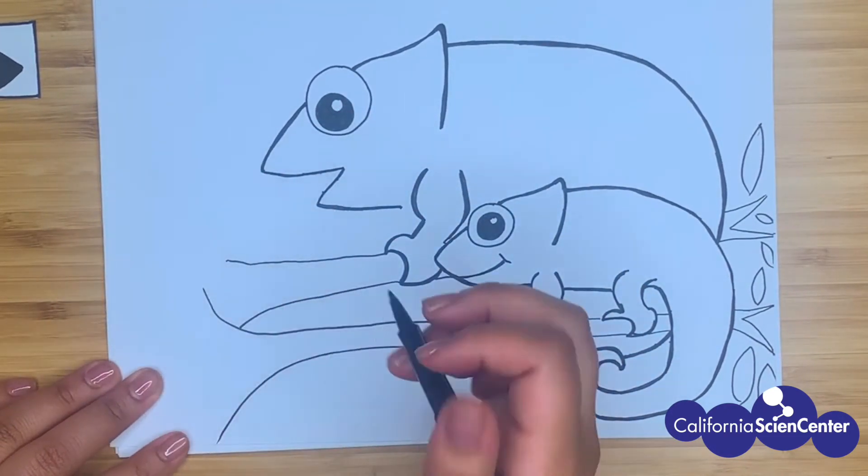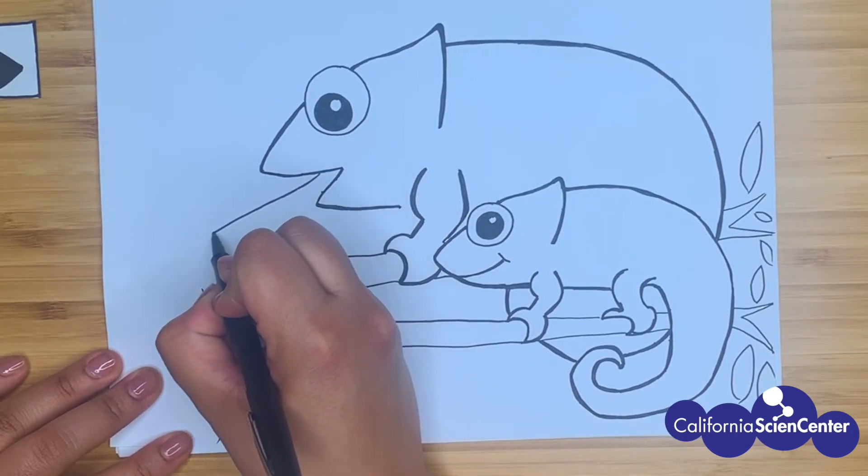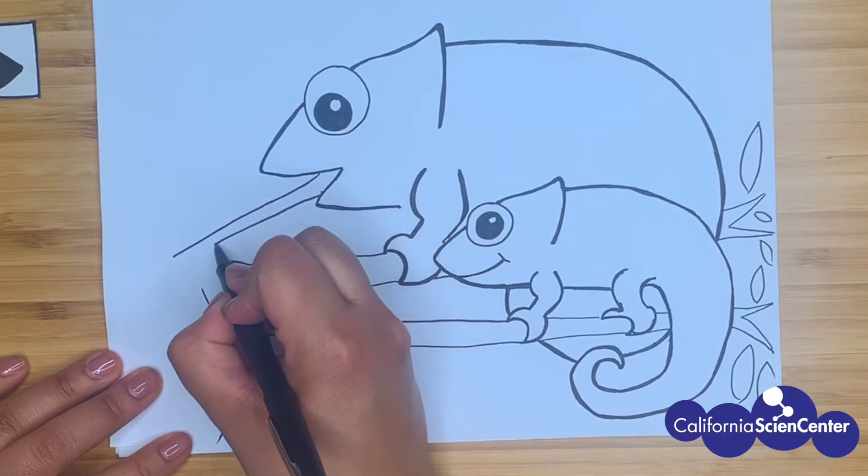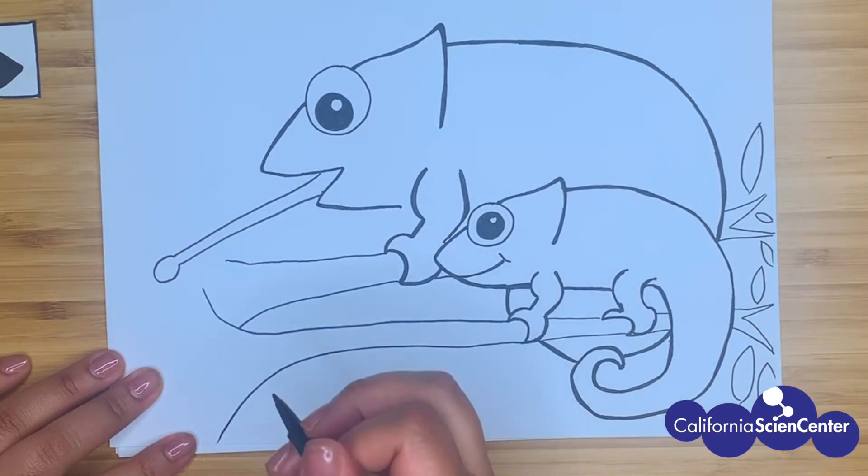She's reaching out for something tasty. Here, mama chameleon is showing baby that they need food to get energy. They need to eat. And later, their bodies will release waste.